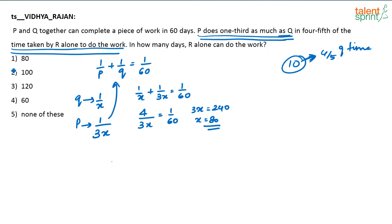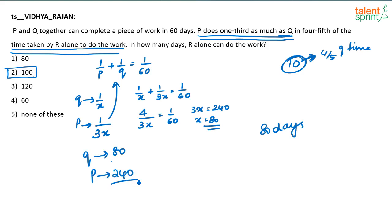So Vidya, was the answer 100? I am assuming the answer given is 100. If 100 is the answer, there should have been a small clarification. What they are trying to say is that this value — 80 days — is Q's time. I know that Q can complete the work in 80 days and P can complete the work in 240 days. What they are saying is P does 1/3 as much as Q in 4/5 of the time taken by R. This 80 days refers to 4/5 of the time taken by R. They should have mentioned: P takes 1/3 as much as what Q would be doing alone to complete the work — that should be specified. Basically, if Q takes x days to complete the full work, in those x days P would have done 1/3 of the work, which is 4/5 of the time taken by R to do the work.